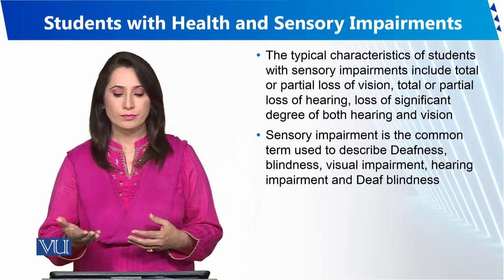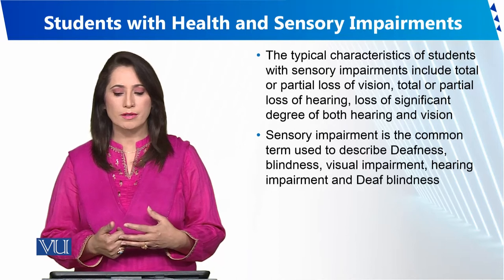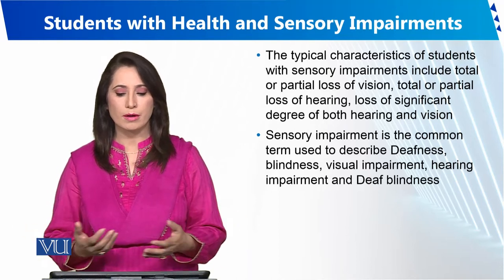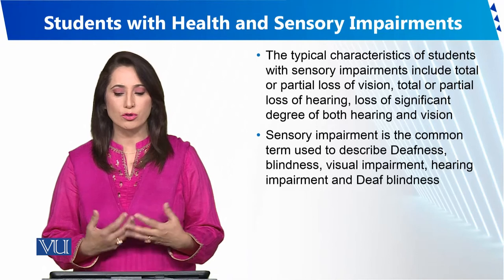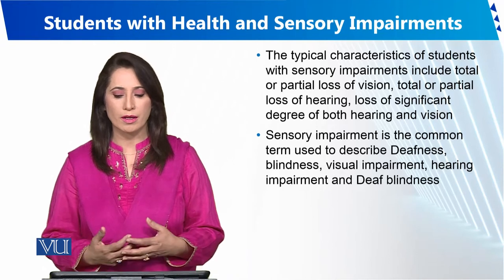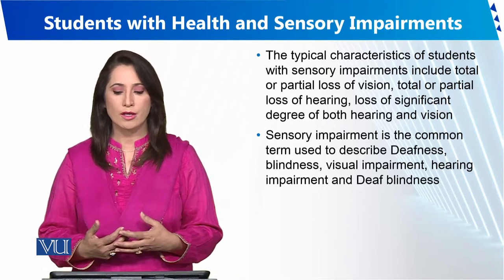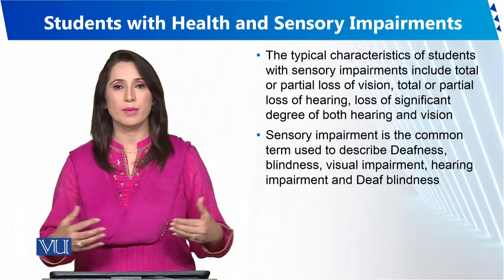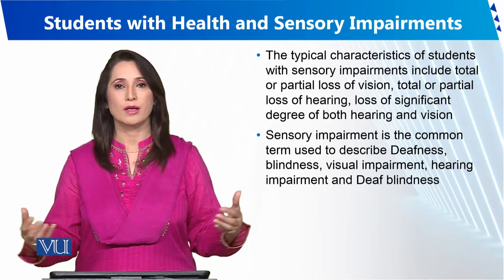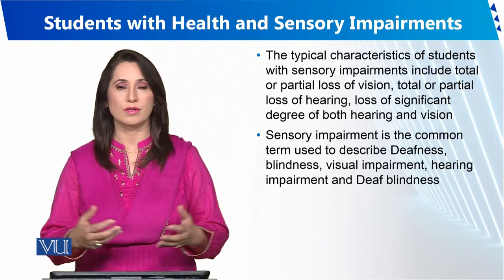Sensory impairment is the common term. It is actually describing blindness, deafness, visual impairment, hearing impairment, and deaf-blindness. So sensory impairment covers four or five groups that we are discussing today.